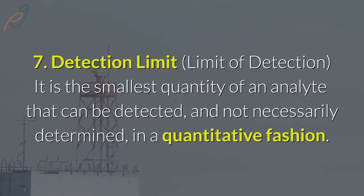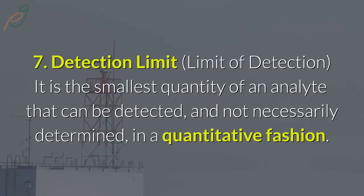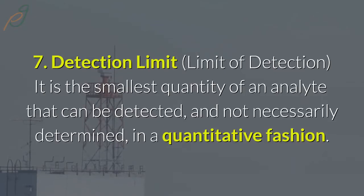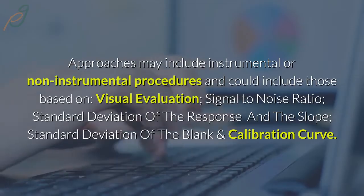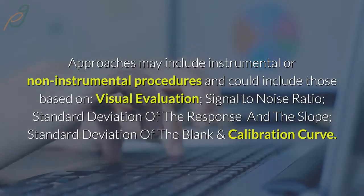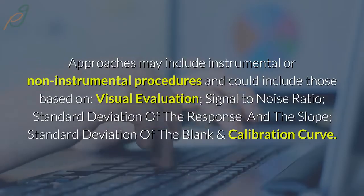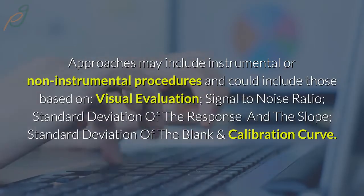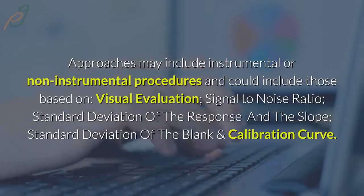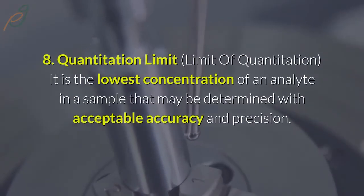7. Detection limit (limit of detection): It is the smallest quantity of an analyte that can be detected, and not necessarily determined in a quantitative fashion. Approaches may include instrumental or non-instrumental procedures, and could include those based on visual evaluation, signal-to-noise ratio, standard deviation of the response and the slope, standard deviation of the blank, and calibration curve.